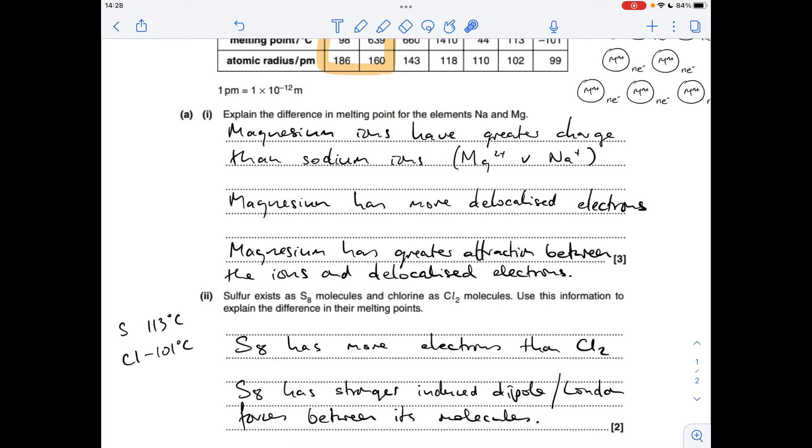Next, we've got to explain the difference in the melting points of sulfur and chlorine. We're told that sulfur exists as S8 molecules and chlorine as Cl2 molecules. This one's all about the strength of the intermolecular forces between the molecules. We're not breaking the covalent bonds between the atoms.